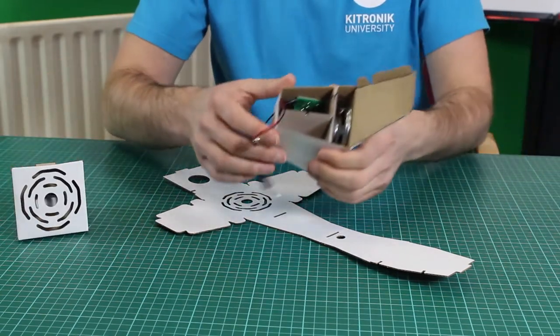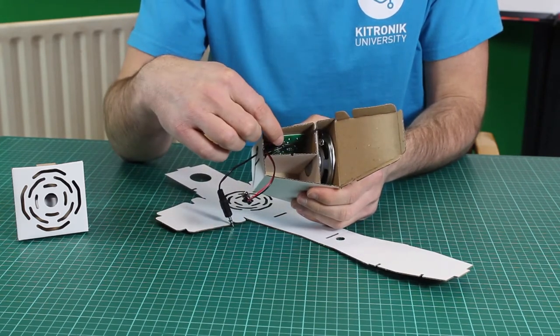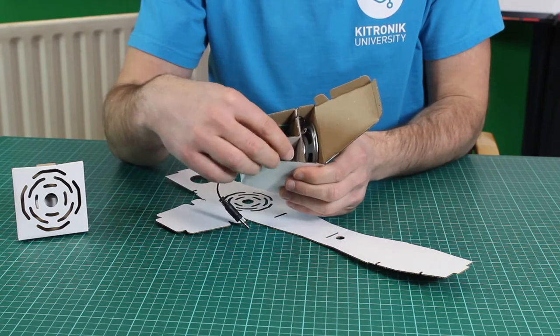Here I have an example with a mono amplifier inside. So we can see here we have the speaker, there is a compartment for the PCB, the lead comes out the back and there's another compartment here for the battery.